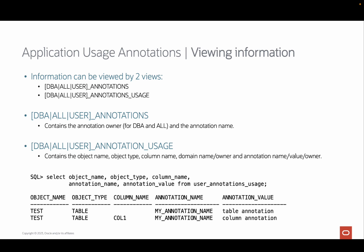The second view contains more detailed information, including the object type, column name, domain information, and — very importantly — the annotation value. Applications and tools can query this view to retrieve relevant information on, for example, security, format masks, which changed or created the object, or whatever is needed in the application or development process. The example shows the two annotations we created in the previous slide with the relevant details, including the annotation value.